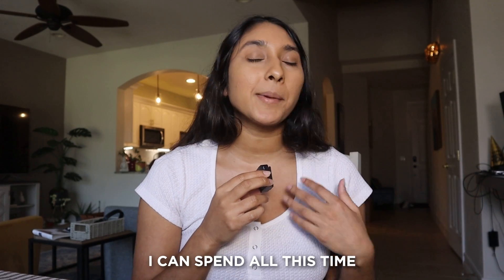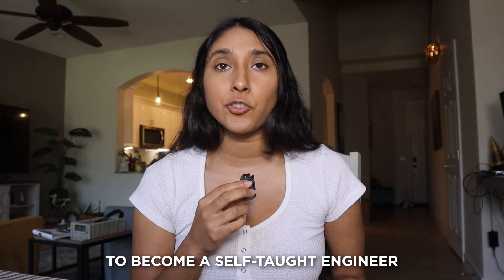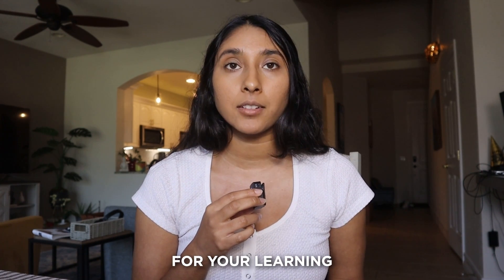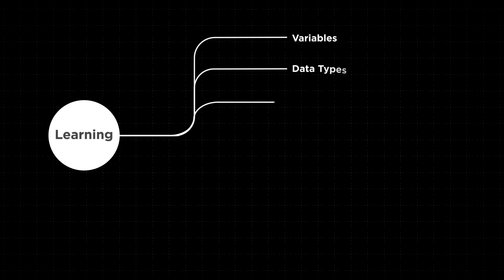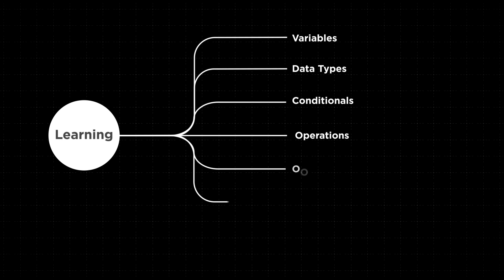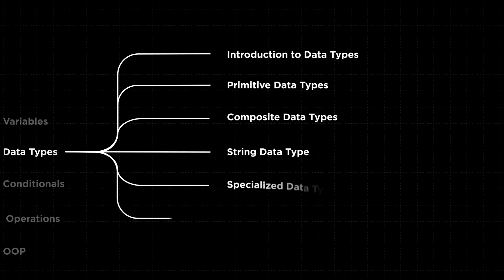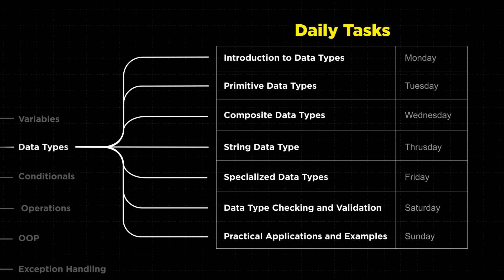The second strategy is having structure. I can spend all this time telling you it's possible to become a self-taught engineer, but the problem is you have to figure out what's actually relevant for your learning. Ideally, you'd need to break down your learning into programming topics such as variables, data types, conditionals, operations, OOP, exception handling, and functional programming — then break those down further into manageable daily tasks. The best scenario is having a schedule where you can hold yourself accountable every single day, but building that structure yourself can be tough.